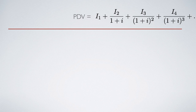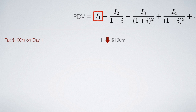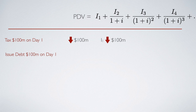Now we move on to the different taxation method. In our previous example, government decided to spend $100 million, and to finance that, government can choose to tax immediately $100 million on day 1. If government decides to do that, we know that I1 would drop by $100 million immediately, which means that the present discounted value of lifetime wealth would decrease by $100 million correspondingly. But we know that government can choose to finance this government purchase increase not through taxation on day 1 — government can actually issue debt on day 1, which is $100 million debt on day 1.